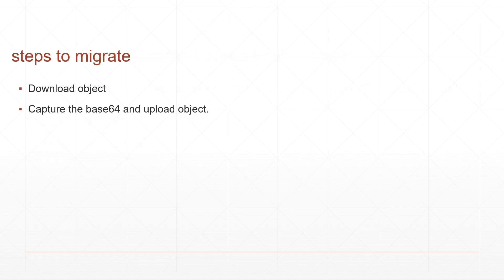The steps to migrate: first we have to download the object, and once you download the object you will get a base64 format. Using that format you can upload the object. Let's go to SOAP UI, test the service, and then go to the OIC integration approach.